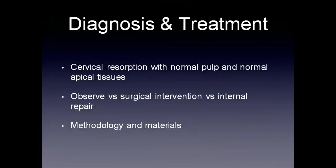In terms of our diagnosis, we do have cervical resorption with a normal pulp and normal apical tissues. There are instances where people choose to observe these cases, but there is mounting evidence that this should not be the approach. These do not progress in a linear fashion, so we can tend to observe them for a long time thinking we're safe, and then in a quick six-month recall this can quickly go from a class 1 to a class 3, leaving extraction as the only option.